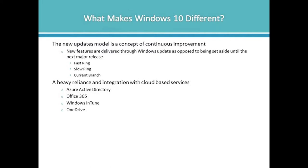That new updates model is a concept of continuous improvement. Instead of waiting until a new OS is ready, Microsoft is going to continually improve this edition of the operating system. New features will be delivered through Windows Update as opposed to being set aside until the next major release. From both an enterprise and home standpoint, you can opt into different levels of updates — fast ring, slow ring, or current branch. You can go into the Windows Update option in the Settings app and choose to receive new revisions, or even join the Insider Preview program to get new OS versions before they're publicly released.